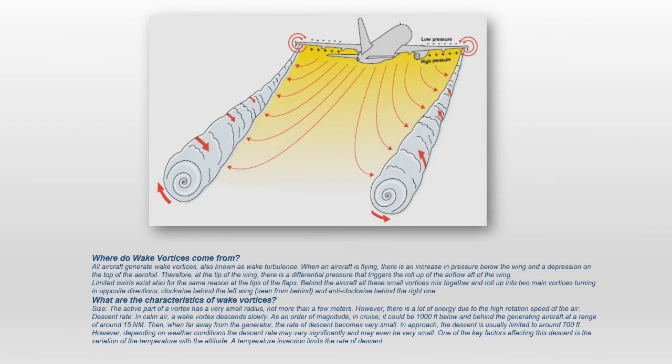Where do wake vortices come from? All aircraft generate wake vortices, also known as wake turbulence. When an aircraft is flying, there is an increase in pressure below the wing and a depression on the top of the aerofoil. Therefore, at the tip of the wing, there is a differential pressure that triggers the roll-up of the airflow after the wing. Limited swirls exist also for the same reason at the tips of the flaps. Behind the aircraft all these small vortices mix together and roll-up into two main vortices turning in opposite directions, clockwise behind the left wing, seen from behind, and anti-clockwise behind the right one.